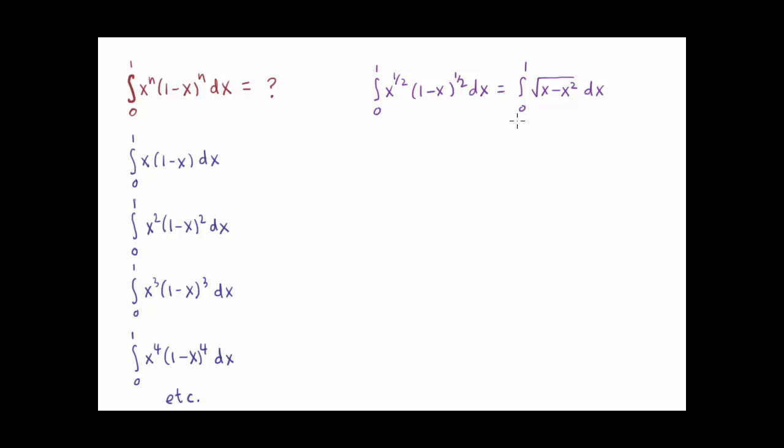This integral can be solved with a method called trigonometric substitution. But it's far easier to find this integral if we remember that definite integrals find area, and this curve we discover to be a semicircle. We can find out that it's a semicircle by setting y equal to the square root of x minus x squared, and squaring both sides.